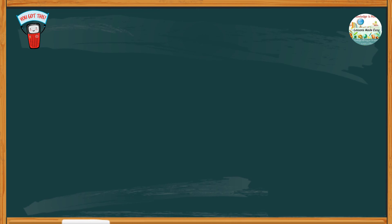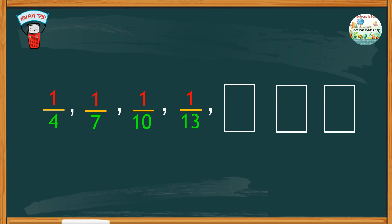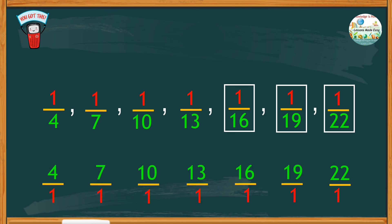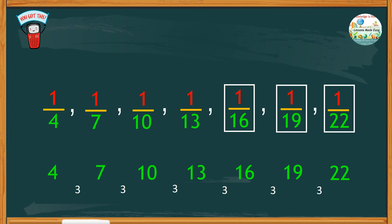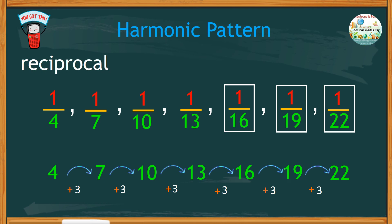Let's try the last one. Study the given unit fraction. What would be the next three numbers in this sequence? I bet you would say 1 over 16, 1 over 19, and 1 over 22. See what happens if we take the reciprocal of these elements. Notice that the reciprocal has a common difference of 3, and it ascends by adding the common difference, forming an arithmetic sequence. This type of pattern is called a harmonic pattern, where the reciprocals of all the elements form an arithmetic sequence.